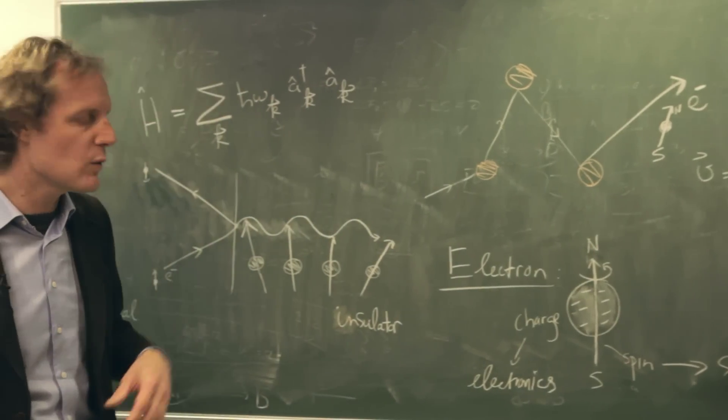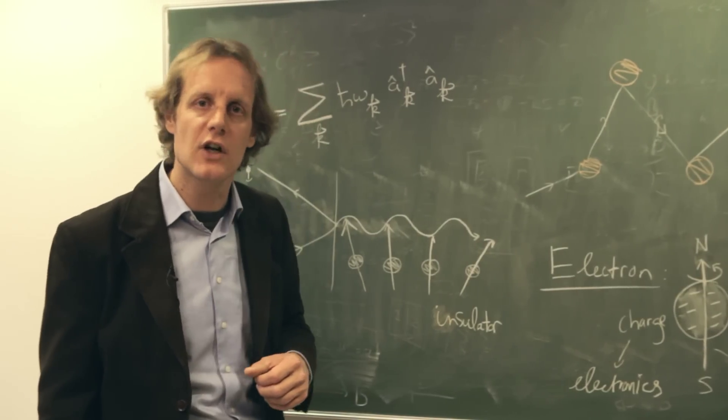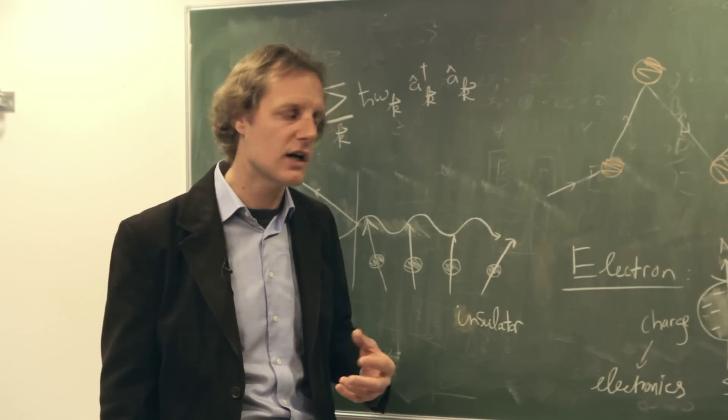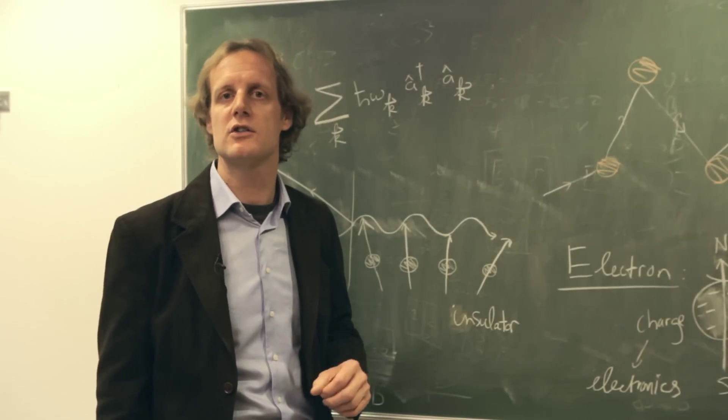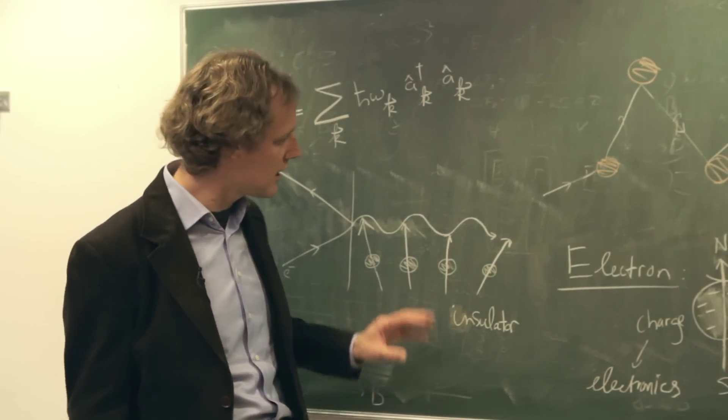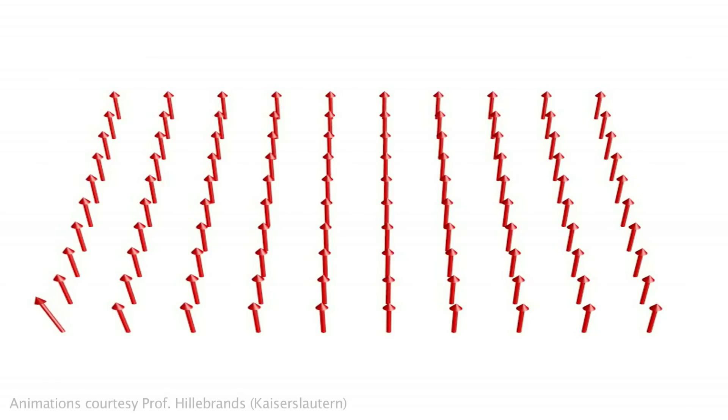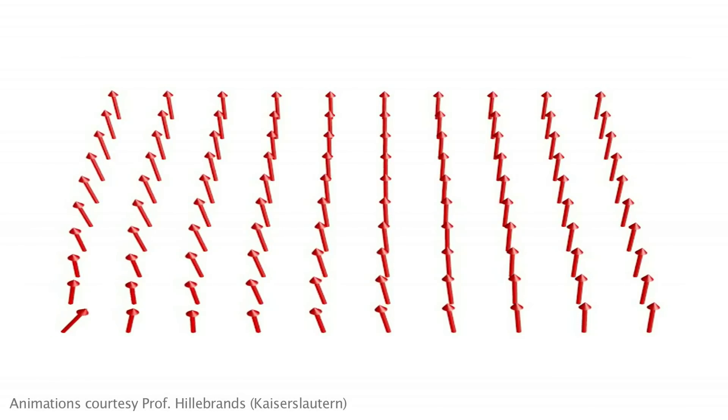What we want to do in this program is the following. We want to make use of materials that don't conduct electric charge, in which the electrons are standing still. But in these materials, the spin of the electron can still undergo a wave-like motion, as indicated in this picture, thereby transporting current and information.